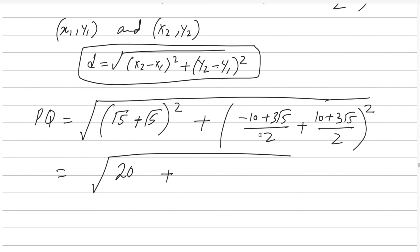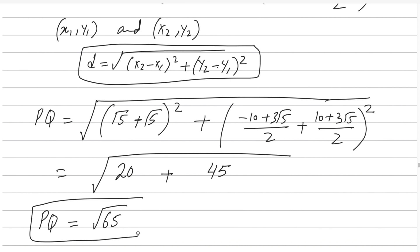Adding the two squared terms: 20 plus 45 equals 65. Therefore the exact distance between P and Q is the square root of 65. Question number 8 is done.